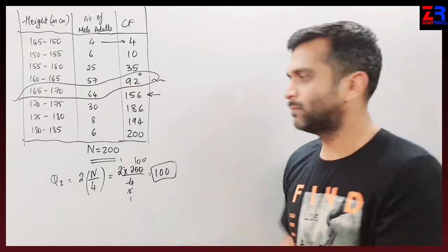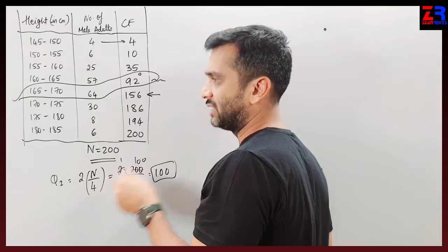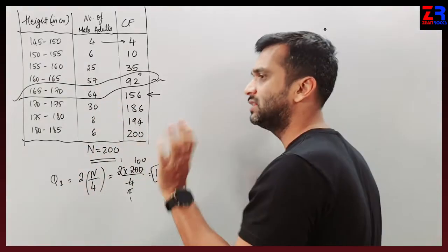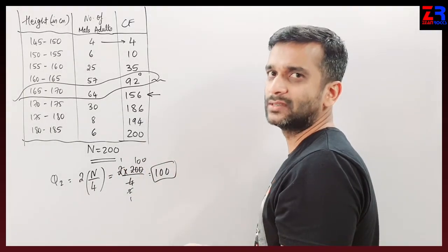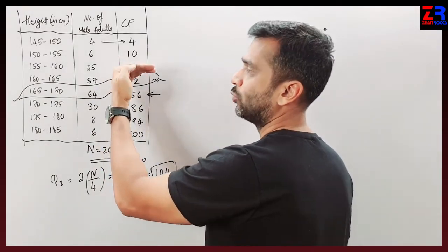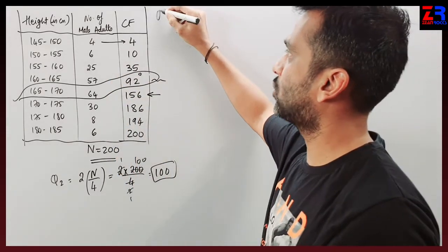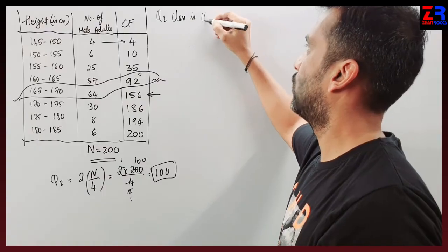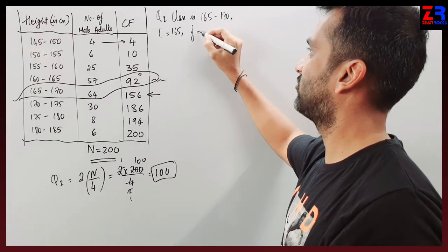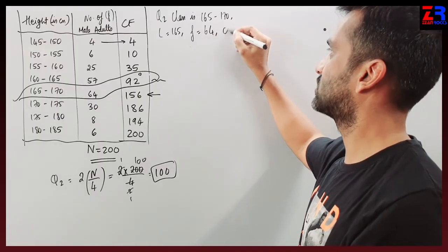This is the same calculation you did in 10th standard for calculating median, because quartile 2 is nothing but median. For quartile 1, same snake, for quartile 3, same snake - just the formula changes. The quartile 2 class is 165 to 170, so L is 165, F is 64, and CF is 92.